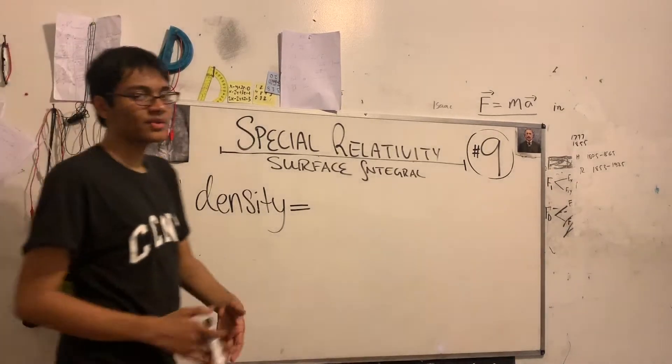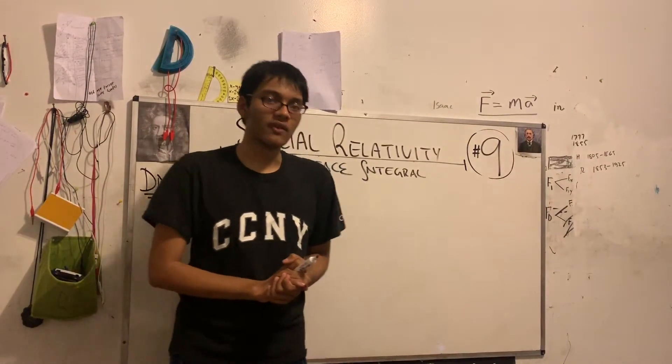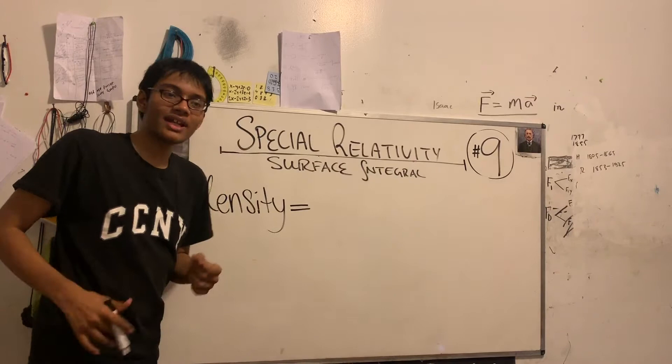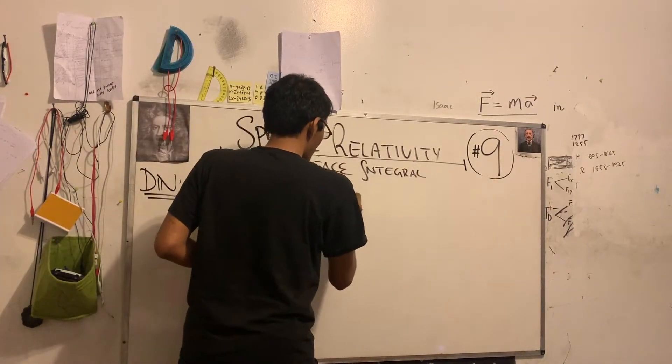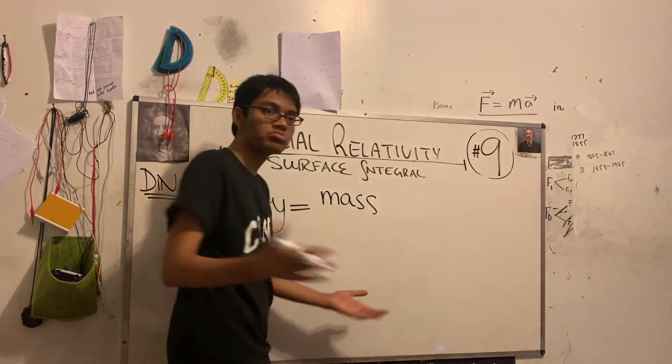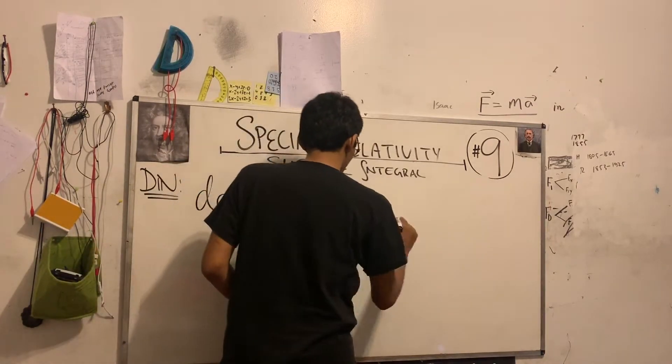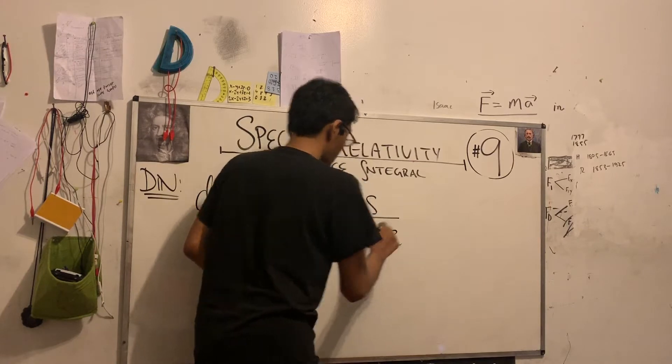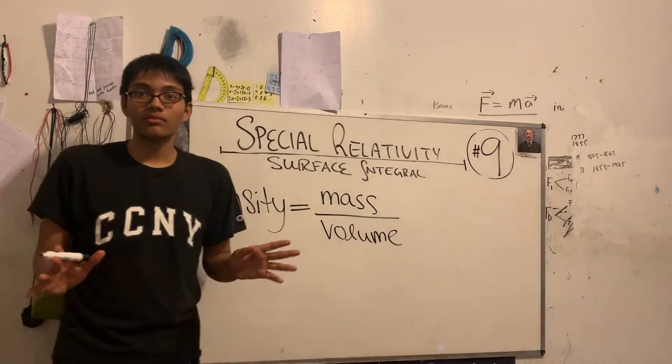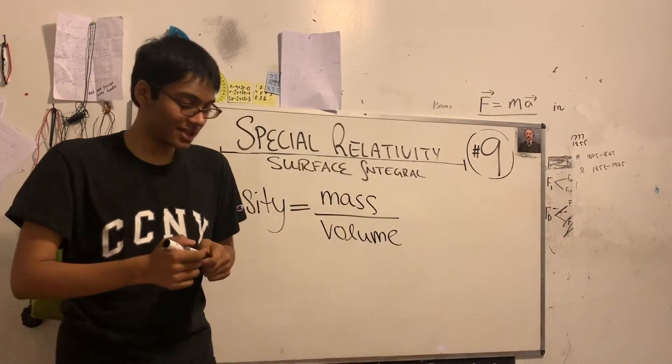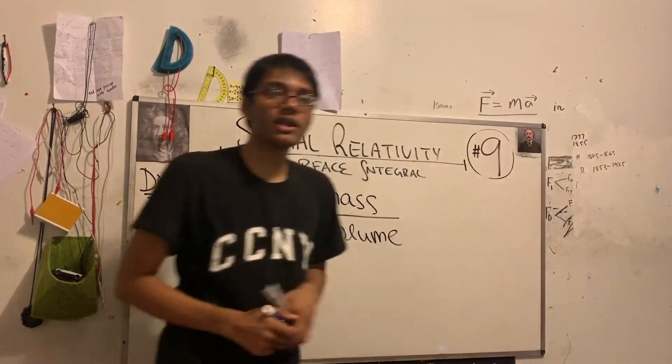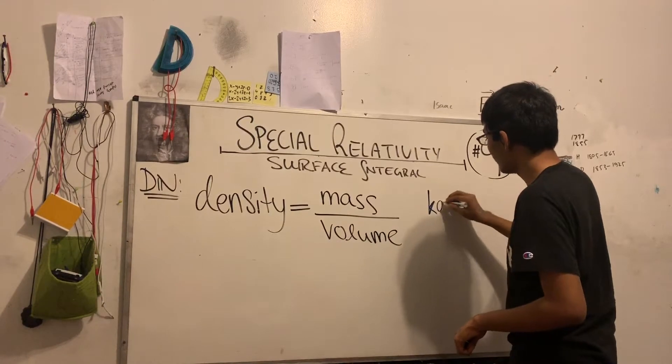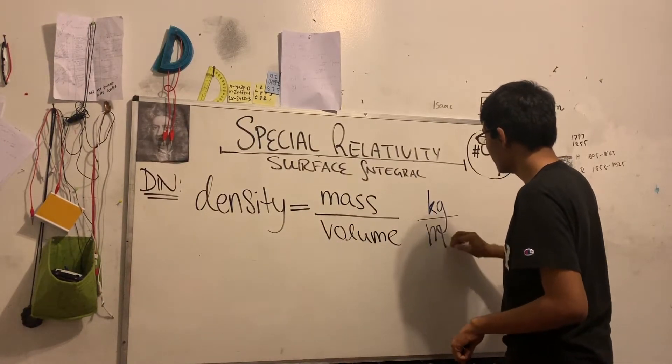Okay folks, so hopefully that was enough time to solve the do now. What is the equation for density? Well, it's going to be the mass of whatever object we're considering, divided by the volume of said object. So let's write down the units for density. Mass is going to be kilograms, and volume is going to be cubic meters.